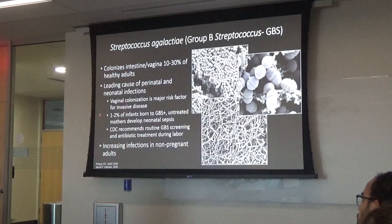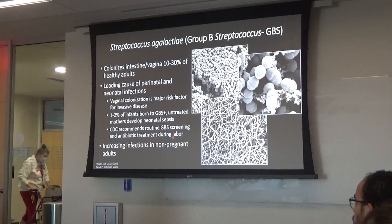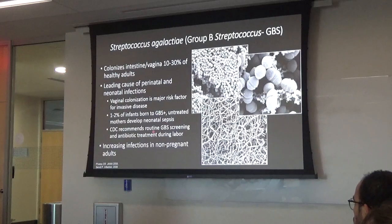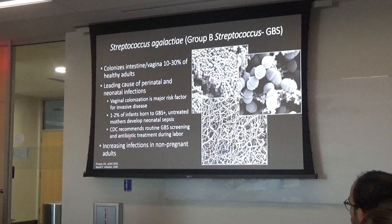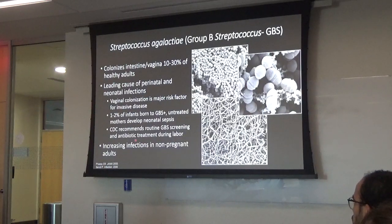It's a small piece of a fairly small pie, but given how severe these infections are and how many women are pregnant, the numbers add up. The CDC actually recommends all women at 35-37 weeks get screened for Group B Strep, and if positive, receive antibiotics during labor. We know that decreases the risk of the baby developing sepsis in the first seven days of life — though there are problems with it, because we're essentially eliminating the baby's microbiome from the start.